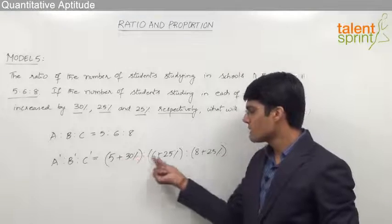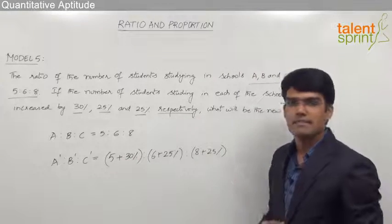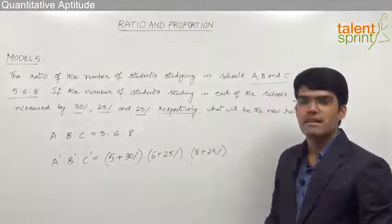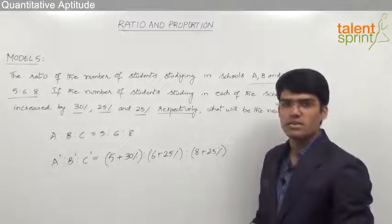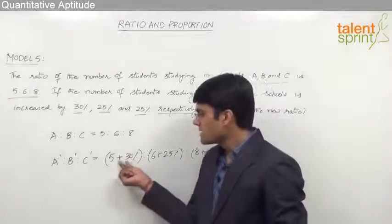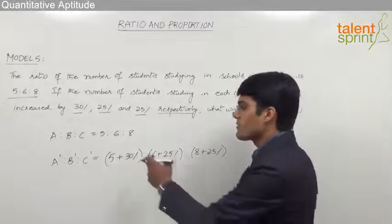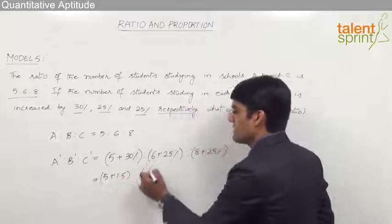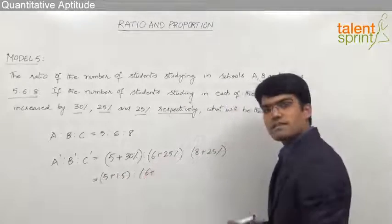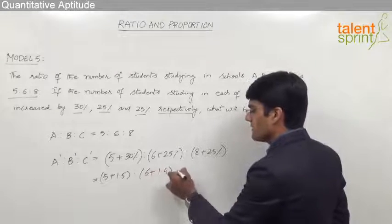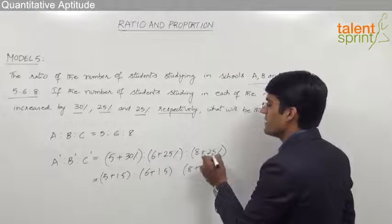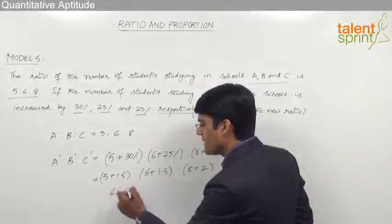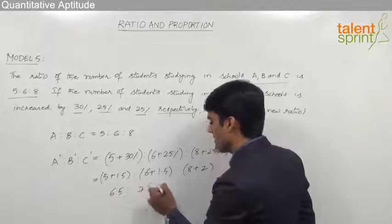Remember, we are taking plus because each of these have increased. Similarly, if percentage decrease is given, we need to take negative signs accordingly. To simplify: 30% of 5 is 1.5, so 5 plus 1.5 equals 6.5. 25% of 6 is 1.5, so 6 plus 1.5 equals 7.5. 25% of 8 is 2, so 8 plus 2 equals 10. The new ratio is 6.5:7.5:10.